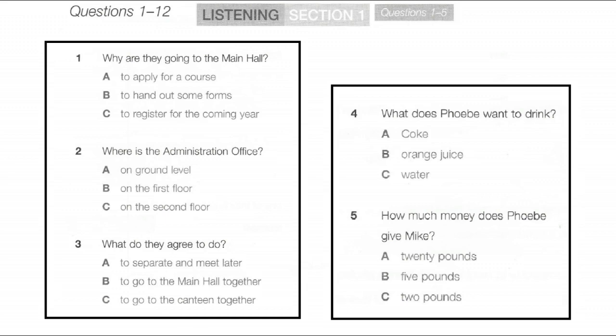Hi, it's Mike, isn't it? Yes, and you're Phoebe, Phoebe, right? Where are you headed? I'm looking for the Main Hall. So am I. Are you going there to register for next year? Yes, I was told to go to Administrations and fill in an application form. That's what I'm about to do. I went to information and they told me it was at the end of this corridor, then we have to turn left and immediately right.